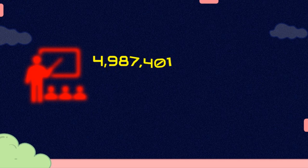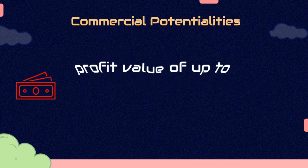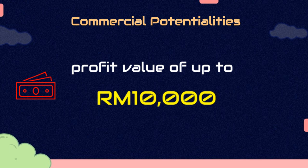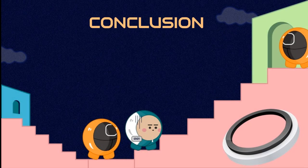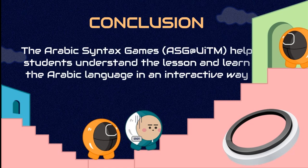An application to obtain intellectual property has been registered on the 29th of April 2022, with registration number IP CR 03255. With a total of 4,987,401 students in Malaysia studying Arabic syntax, this product is expected to be commercialized with a profit value of up to RM 10,000 when marketed. The Arabic syntax games help students understand the lesson and learn the Arabic language in an interactive way.